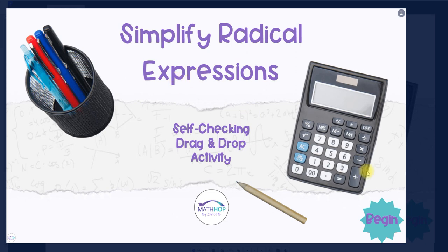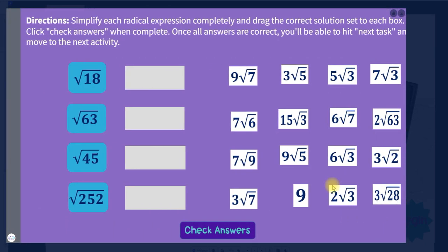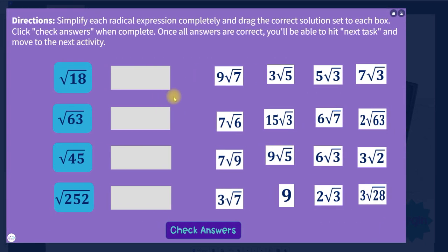So you'll share the link with your students, and then they'll click begin. Once they click begin, they'll come to the first slide of the activities. In this case, there are eight slides, both square and cube roots.